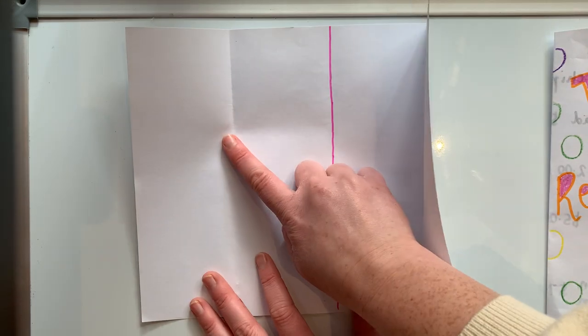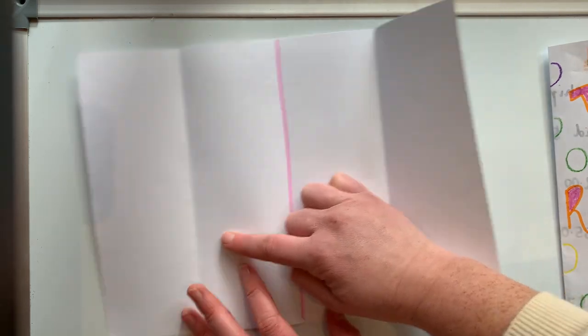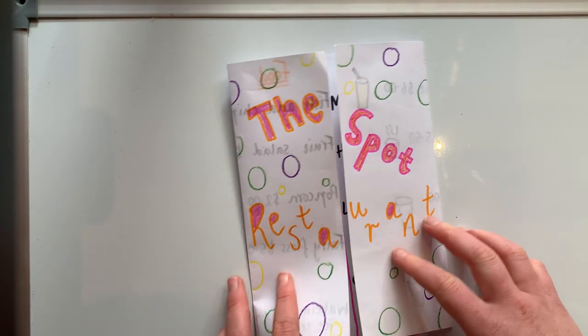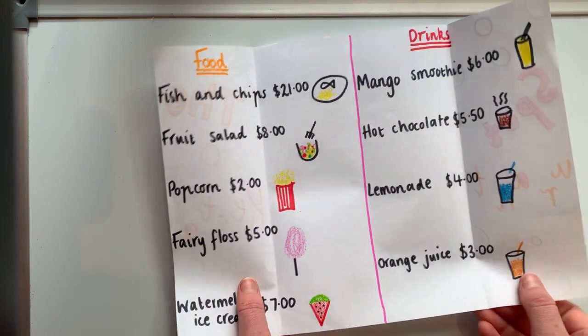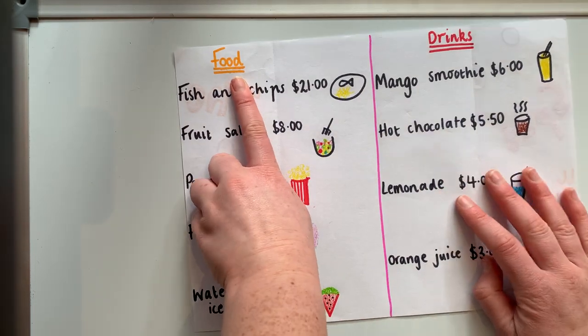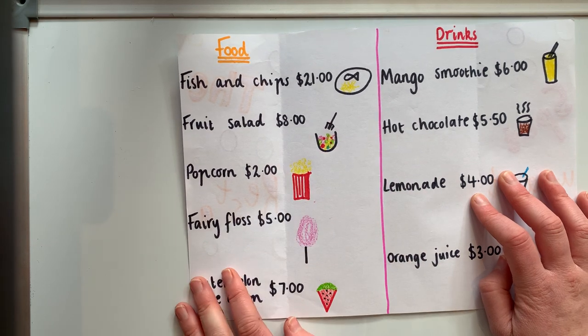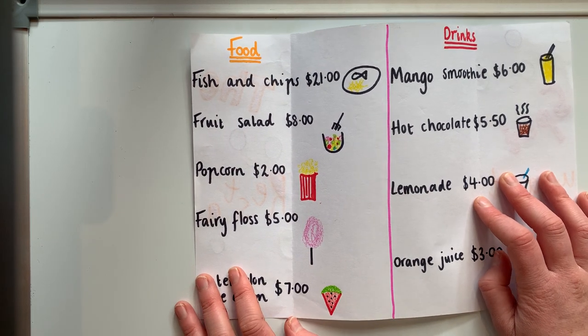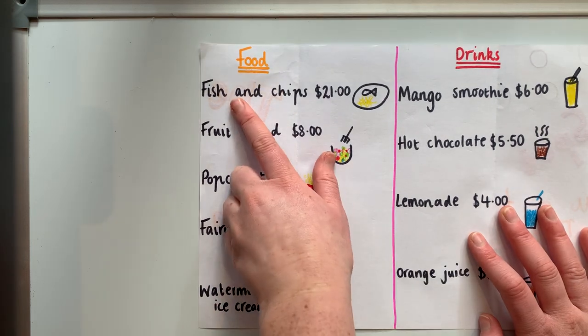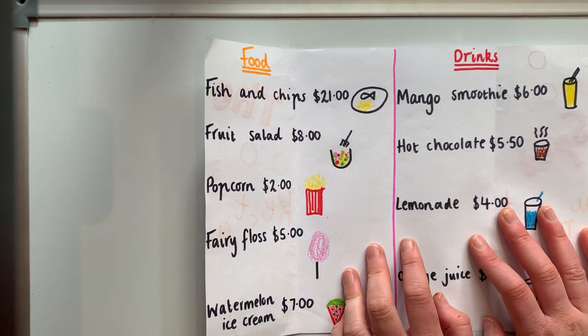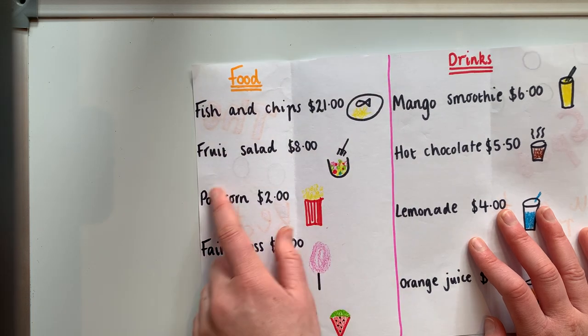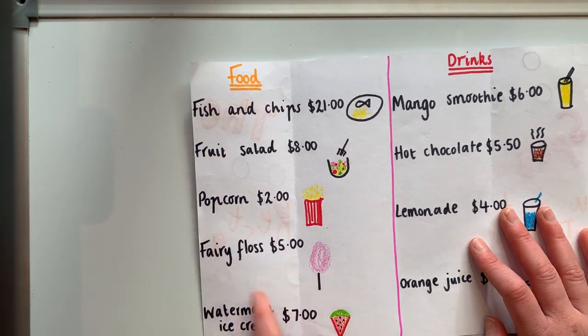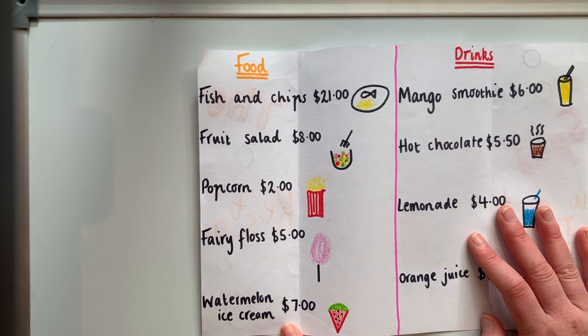On one side you're going to have your food, and the other side you're going to have your drinks. This is what I've done — the Spot Restaurant. On this side I've got my food, on this side I've got my drinks. I had a really good think about what my favorite foods were. In the food part I've written what I would like to sell at my restaurant: fish and chips, fruit salad, popcorn, fairy floss, and watermelon ice cream.